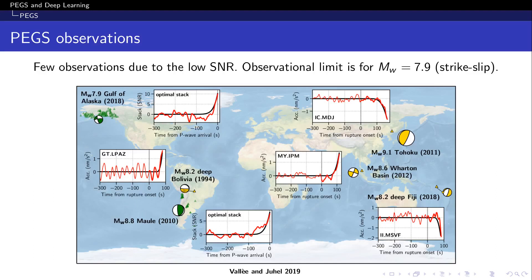PEGS sensitivity to magnitude and the fact that PEGS arrives before P waves has attracted a lot of interest for possible application in earthquake and tsunami early warning systems. But what is the detectability of PEGS on real data? So this figure shows all the PEGS observations made so far on large earthquakes occurring in the last 30 years and only six observations were possible due to the low signal-to-noise ratio.